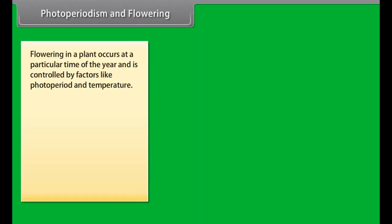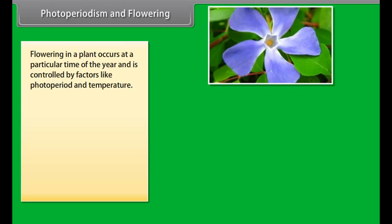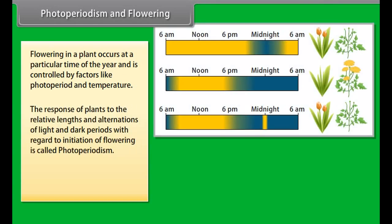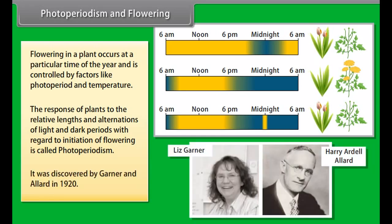Flowering in a plant occurs at a particular time of the year and is controlled by factors like photoperiod and temperature. The response of plants to the relative lengths and alternations of light and dark periods with regard to initiation of flowering is called photoperiodism. It was discovered by Garner and Allard in 1920.